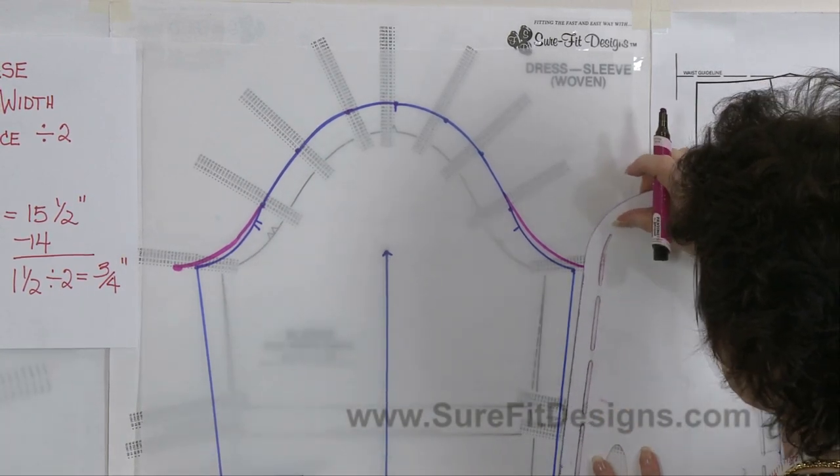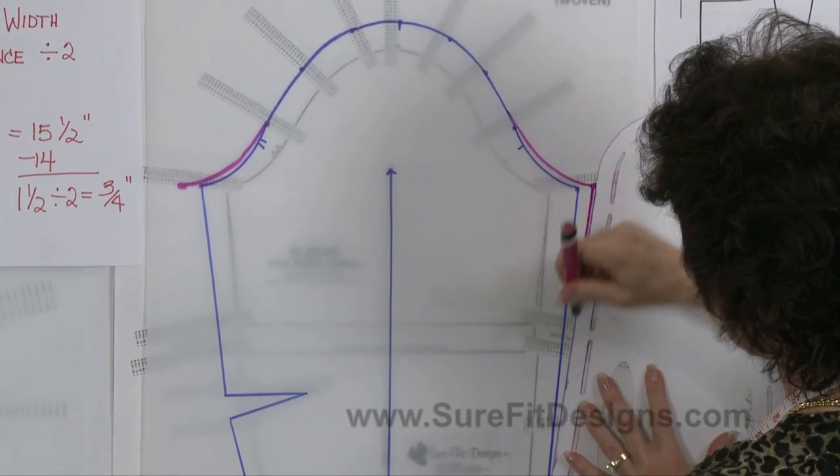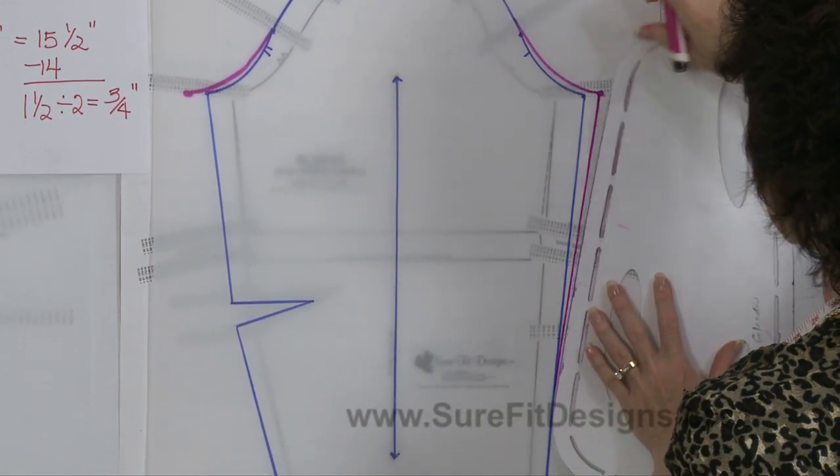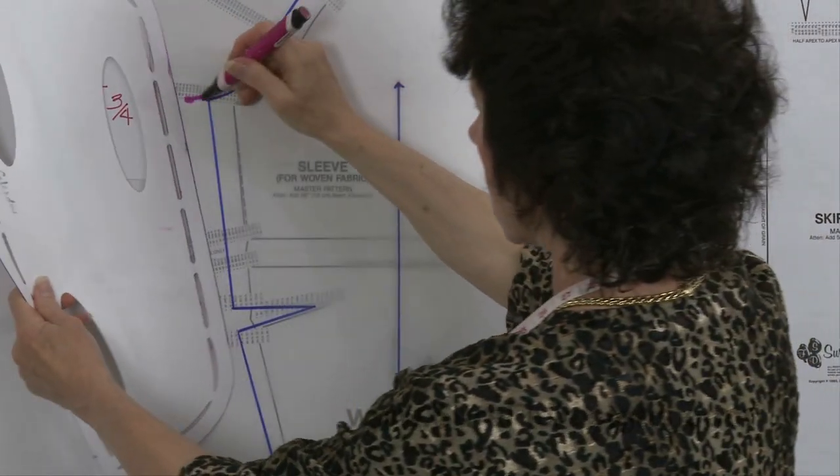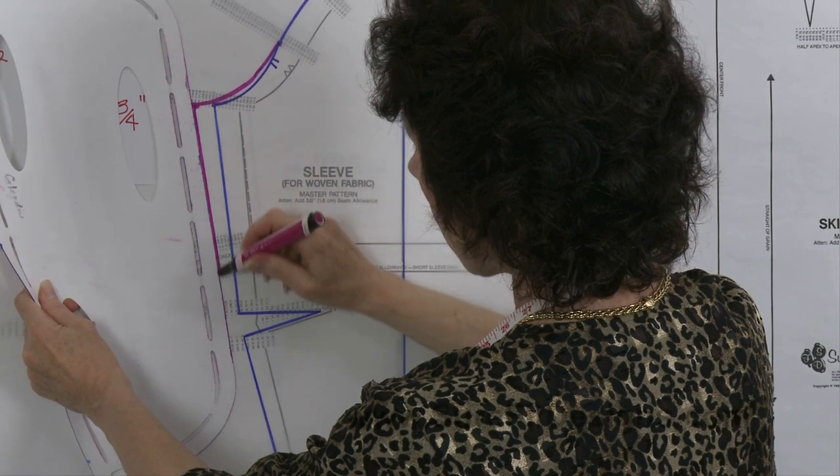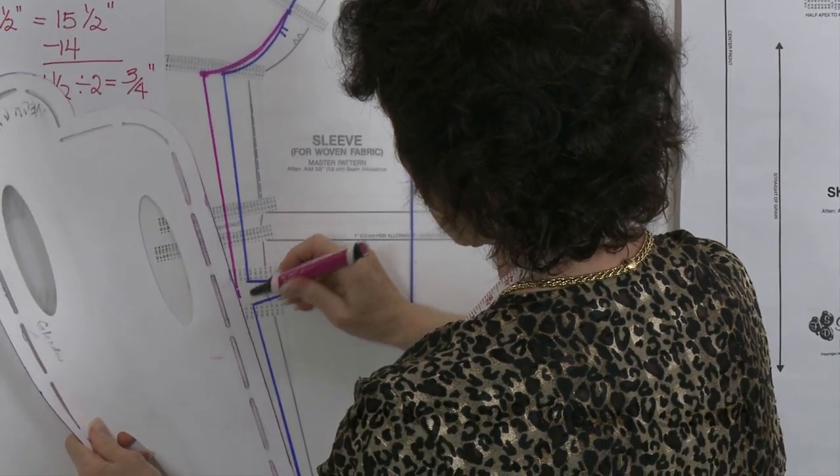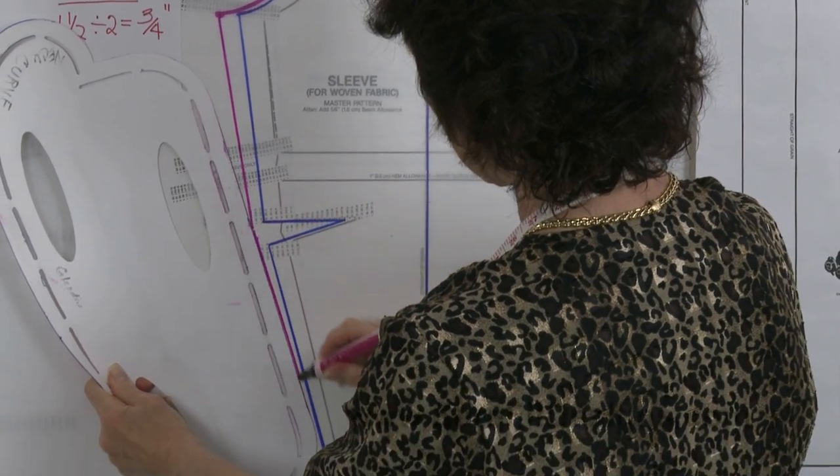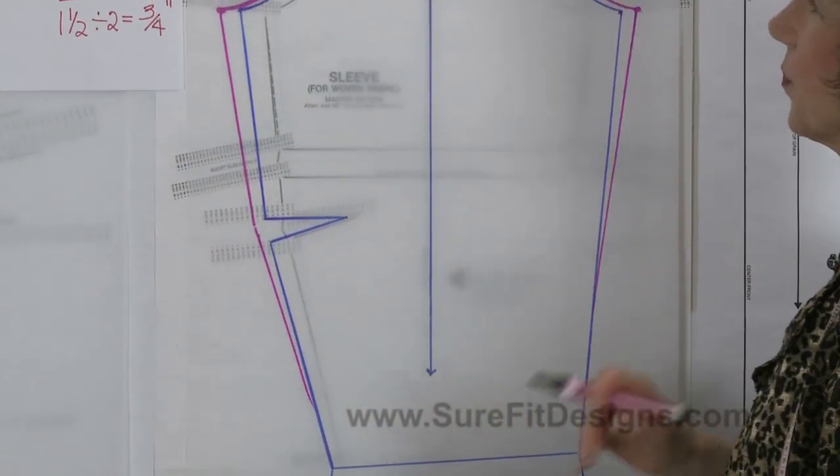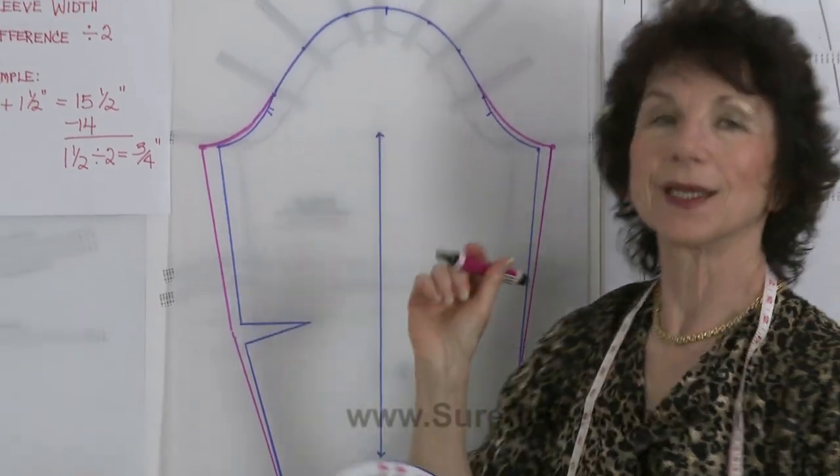And then of course all you would do would be to blend this down into the side seam of the sleeve, so it would look something like this. And if you need to make the elbow area wider, you can do that as well. It just depends what you need for your specific arm shape.